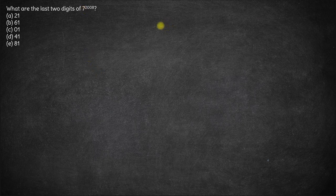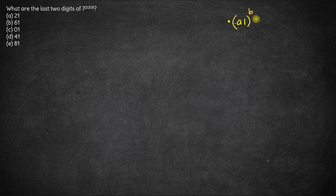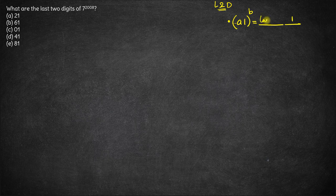Now, here we'll be using two concepts. First is: any number ending with the last two digits as a1, where the last digit is 1 and the second last digit is a, and there must be some digits before this. And if it has some power b, the last digit of this number will be 1 and the second last digit will be the last digit of a multiplied by b. This is one concept.